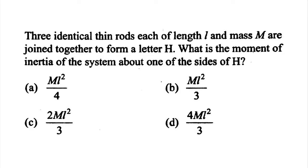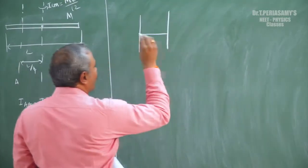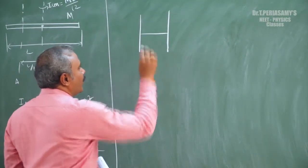Three identical thin rods, each of length L and mass M, are joined together to form the letter H. What is the moment of inertia of the system about one of the sides of the H?